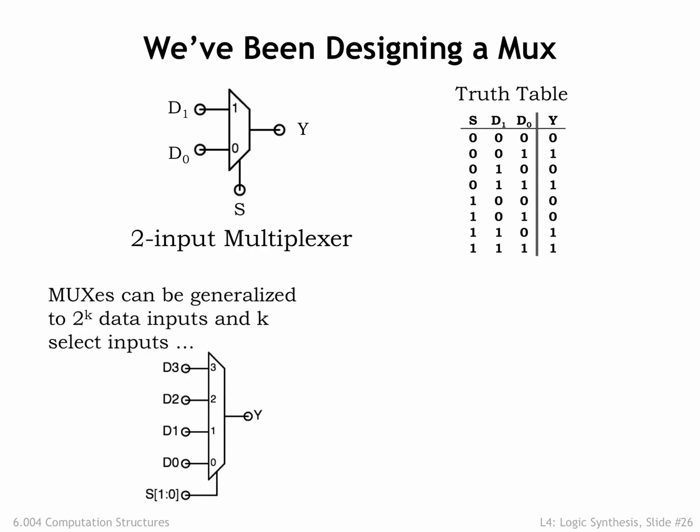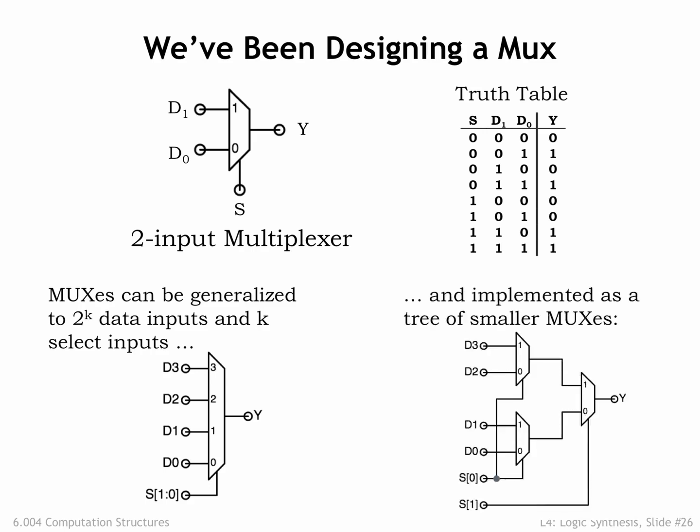MUXs come in many sizes depending on the number of select inputs. A MUX with k select inputs will choose between the values of 2-to-k data inputs. For example, here's a 4-to-1 multiplexer with 4 data inputs and 2 select inputs. Larger MUXs can be built from a tree of 2-to-1 MUXs, as shown here.